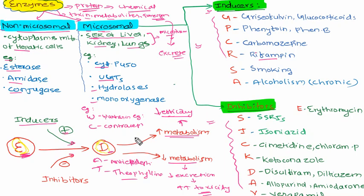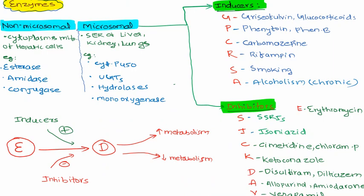To summarize: inducers will enhance metabolism and decrease the efficacy of the drug, whereas inhibitors will inhibit the enzyme, decrease metabolism and excretion, and that will lead to toxicity. Now let's look at examples of inducers. We can remember inducers through the mnemonic GPCRS — standing for G protein-coupled receptors.